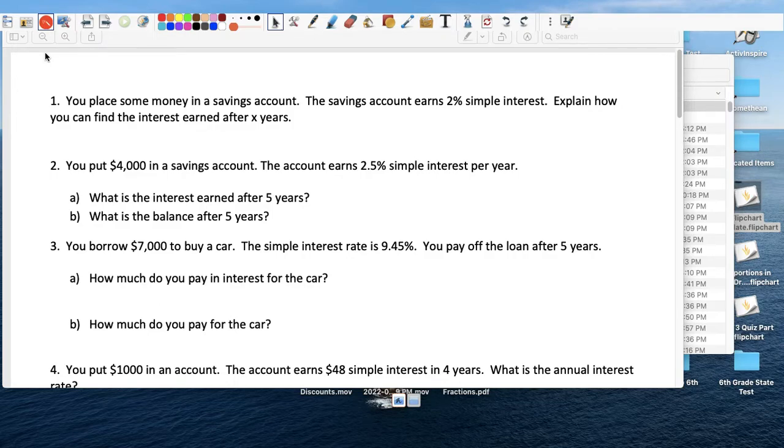Question one says if you put some money in a savings account and you get an interest rate of 2% a year, explain how you would find the interest after so many years. Well, all you have to tell the person is that you would take the money or the principal, multiply it by the interest rate, in this case 0.02, and then times the number of years that they're leaving the money in that account.